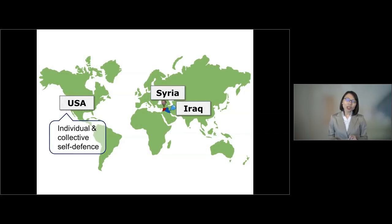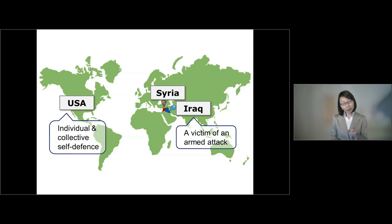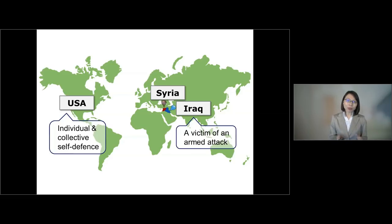Going back to the initial example of September 2014, the US government invoked not only individual self-defense but also collective self-defense in order to assist the Iraqi government, which was supposed to be the victim of an armed attack. Consider whether the US claim is persuasive in light of the five aspects just explained. Having discussed the first exception to the principle of non-use of force, in my next clip I'd like to talk about the second exception to the principle of non-use of force.